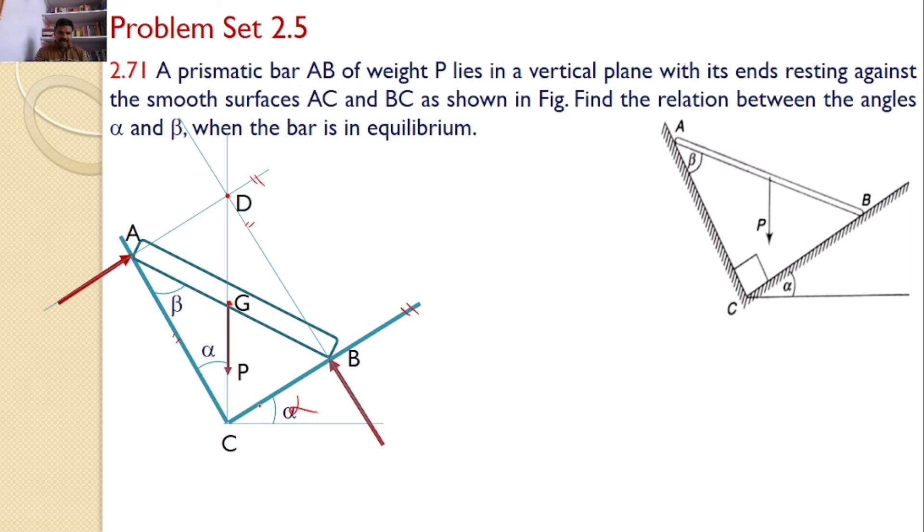Because this line and this line are perpendicular, and this line and this line, these two are perpendicular. Hence, the angle between these two must equal the angle between these two from the principle of geometry. So this angle is alpha.